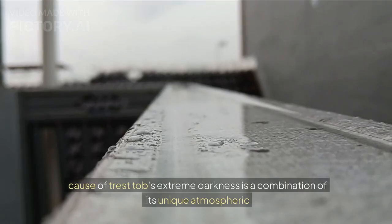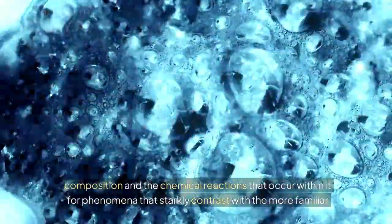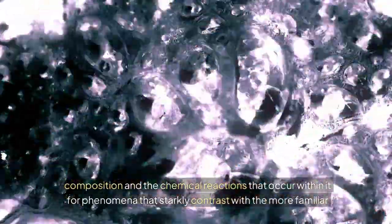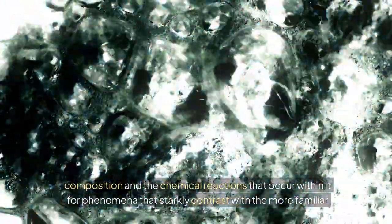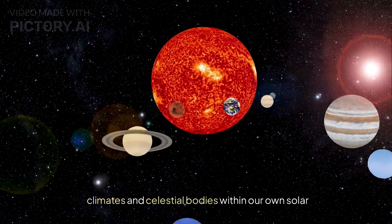The cause of TrES-2b's extreme darkness is a combination of its unique atmospheric composition and the chemical reactions that occur within it, phenomena that starkly contrast with the more familiar climates and celestial bodies within our own solar system.